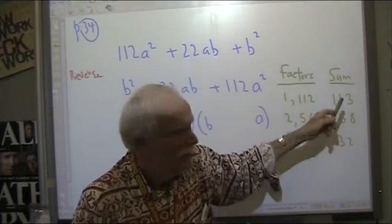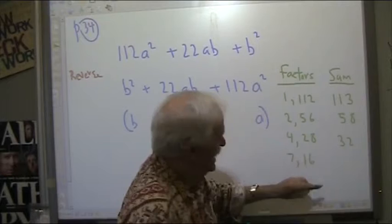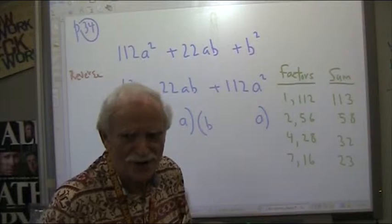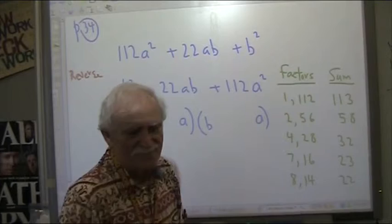Do you notice? We're going down continuously. All right, and now what's the next one? Seven actually goes in, right? And what is that? 23. All right, we're getting close. What's next? Eight. Fourteen. That's 22. Oh, my gosh. Yay! We got it.